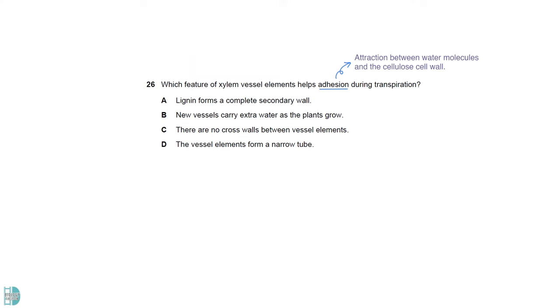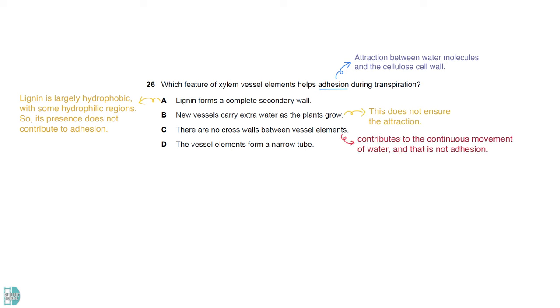Adhesion is caused by the attraction between water molecules and the cellulose cell wall. A is incorrect, as lignin is largely hydrophobic, with some hydrophilic region. So its presence does not contribute to adhesion. B is also wrong, as extra water does not ensure the attraction between them and the wall. C contributes to the continuous movement of water, and that is not adhesion. So D is the answer. A narrow tube causes bonds to form more easily between the water molecules and the wall.